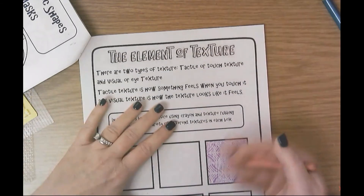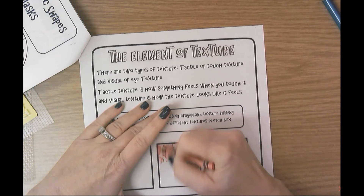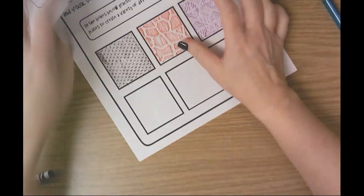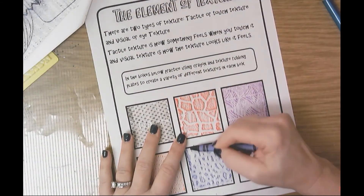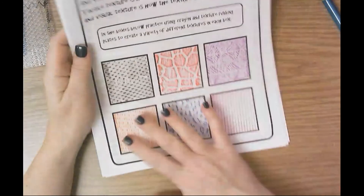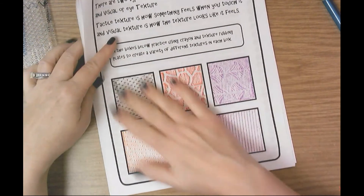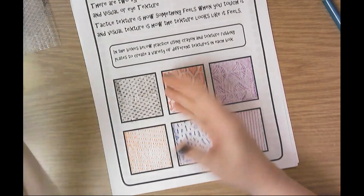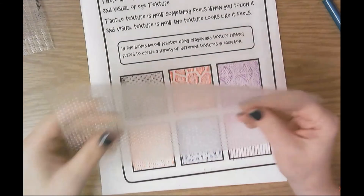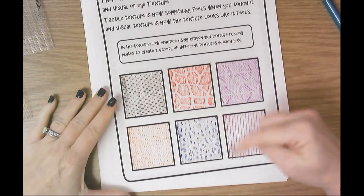Try a different texture plate and a different color in each box, and color neatly — stay within the square and don't just scribble randomly. Visual texture has a lot to do with pattern — the same thing repeating over and over. If you touch the paper now, you'll notice it's still smooth. We've created visual texture from actual tactile texture: you can feel the bumps on the plate — that's actual texture — and with your eye you can see the texture we created on the paper.